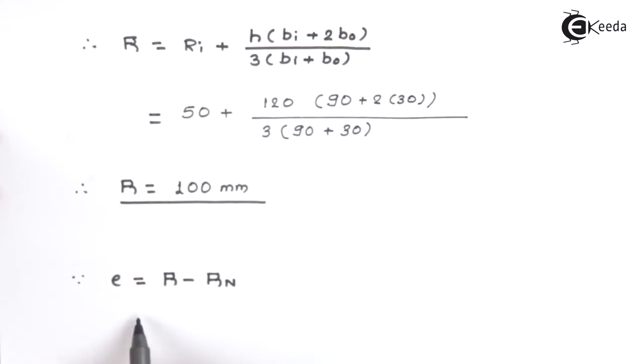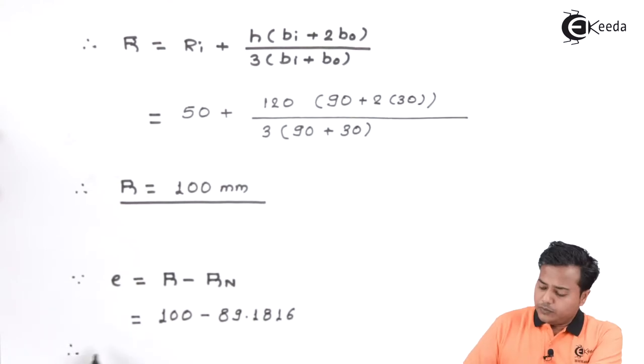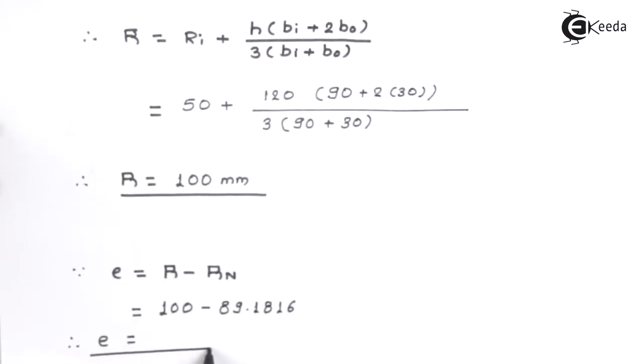Thereafter, the third component which is the centricity comes out to be, therefore, E comes out to be 10.8184 millimeter.